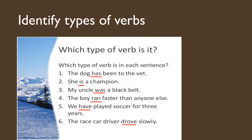Some exercises to do. I have identified the verb used in the sentence, and I want you to categorize whether the verb is linking, helping, or action. Number one: 'The dog has been to the vet' — this is a helping verb; the word 'has' here. Number two: 'She is a champion' — this is actually a linking verb. Number three: 'My uncle was a black belt' — 'was' is actually a linking verb in the past tense. Number four: 'The boy ran faster than anyone else' — this is past tense but it is an action verb. Number five: 'We have played soccer for three years' — this is actually a helping verb. Number six: 'The race car driver drove slowly' — this is also past tense and refers to an action verb.